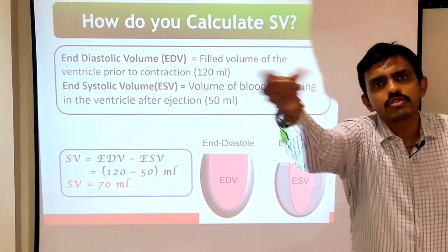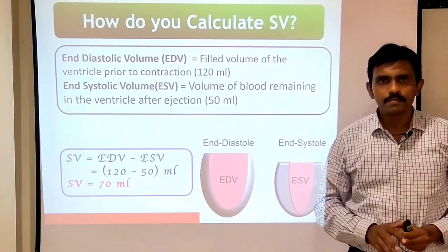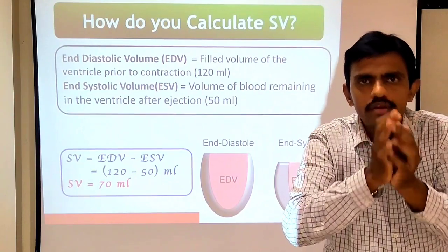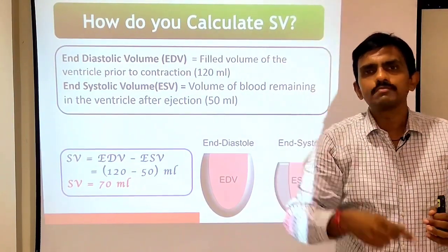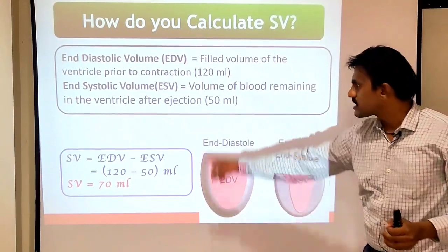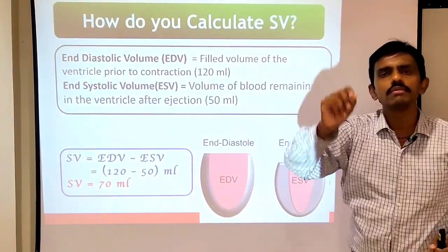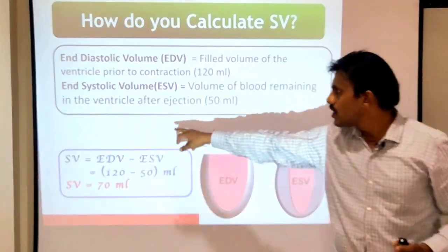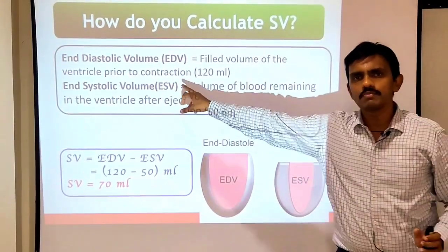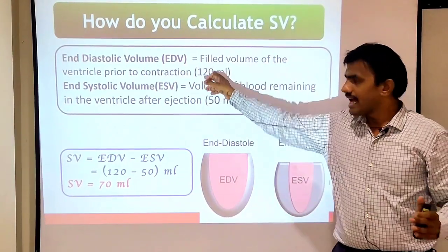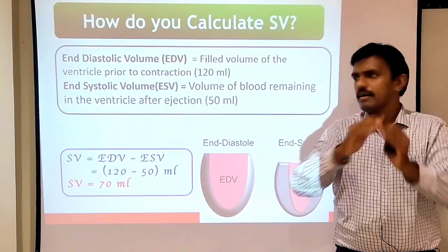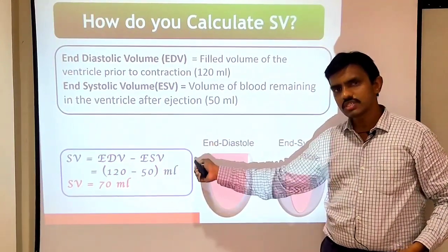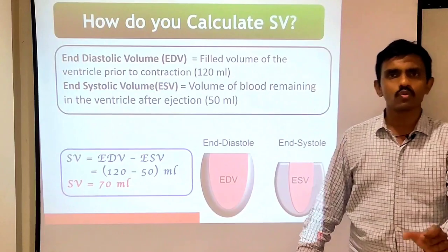After diastole, your heart contracts — the ventricles contract — and blood is pumped out. With each contraction, 70 ml is pumped out — that is the stroke volume. What remains at the end of systole: 120 minus 70 equals 50 ml. That is the end systolic volume. So stroke volume equals end diastolic volume minus end systolic volume: 120 minus 50 equals 70 ml.